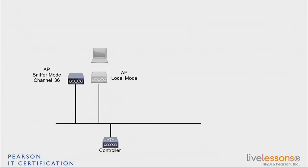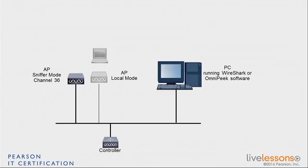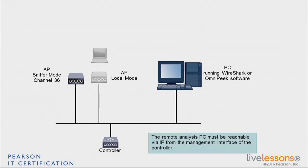The channel you ask it to sniff, of course, would be the channel on which your neighboring AP in gray, in that illustration, is servicing clients. And then that AP is going to send whatever it sniffs to a station where you have Wireshark or OmniPeek running. That Wireshark station needs to be reachable from the controller because traffic is going to go through the controller.